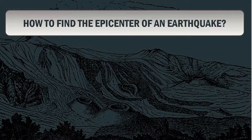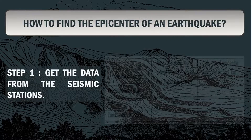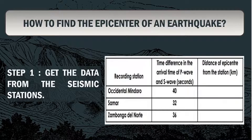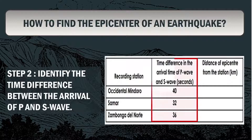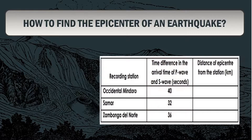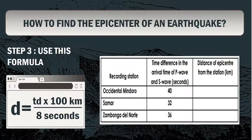To identify the epicenter using this method, we are going to follow three steps. Step 1: Get the data from the seismic station. Step 2: Identify the time difference between the arrival of P and S waves. Step 3: Use the formula D equals TD times 100 kilometers divided by 8 seconds.